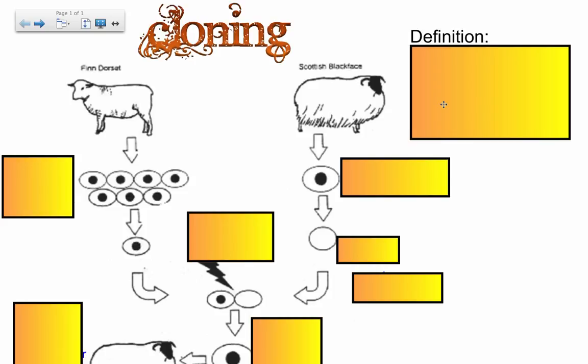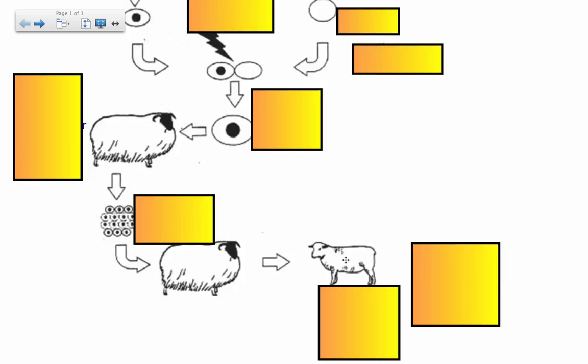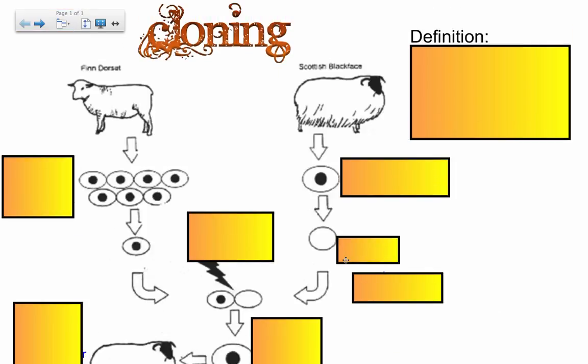Therapeutic cloning is more about stem cell therapies. If you've taken a look at stem cells before and the ethical issues involved there with therapeutic cloning, make sure you understand the difference. Reproductive cloning is how Dolly is produced. Therapeutic cloning — think therapy — is about stem cell therapies, using cloning of cells to produce additional types of targeted cells.